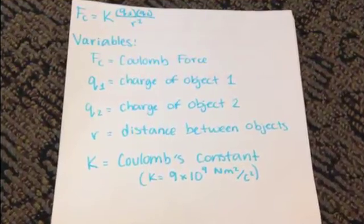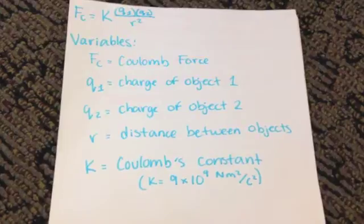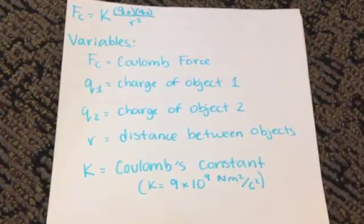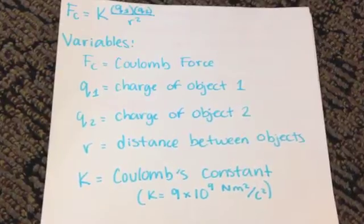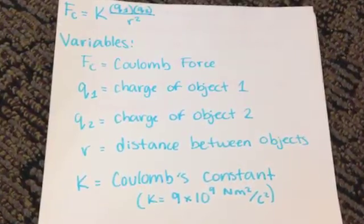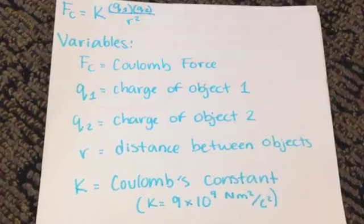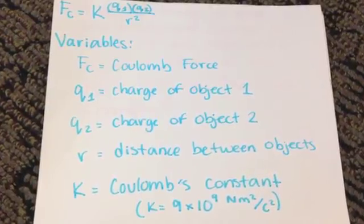Coulomb's Law is force equals k constant times charge of object 1 times charge of object 2 divided by distance between objects squared. k equals 9 times 10 to the 9 Nm² divided by C².